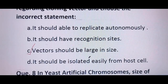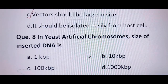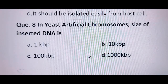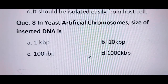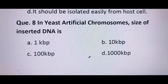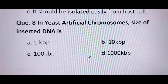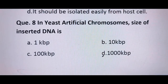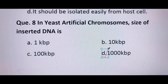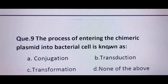Next question: in a yeast artificial chromosome, the size of inserted DNA is A) 1 kbp, B) 10 kbp, C) 100 kbp, or D) 1000 kbp. The correct answer is D — 1000 kilobase pairs.